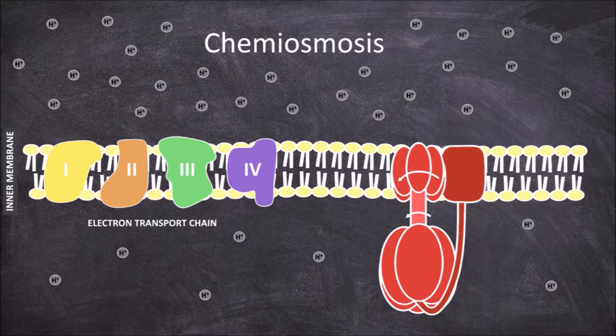Once they exit the channel they bind to binding sites on the rotor. This binding causes a change in the shape of the rotor subunit which in turn causes the rotor to rotate within the membrane.